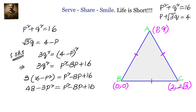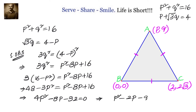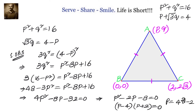Bringing everything to one side, we get 4 P square minus 8P minus 32 equals 0. Dividing by 4 gives P square minus 2P minus 8 equals 0, which factorizes as (P minus 4)(P plus 2) equals 0. So the values of P are 4 or minus 2.